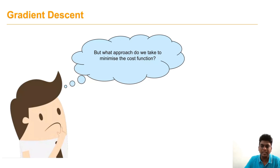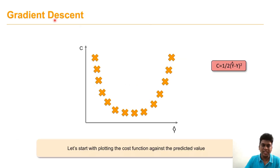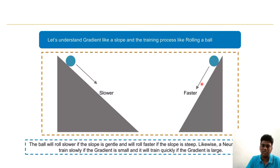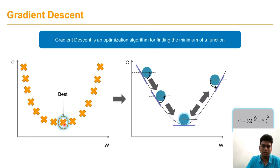How do we minimize the cost function? Using gradient descent back propagation, we identify the cost function minimum. Like a ball rolling slower on a gentle slope and faster on a steep slope, a neuron trains slowly when the gradient is small and quickly when the gradient is large. This gives us the best optimal solution.